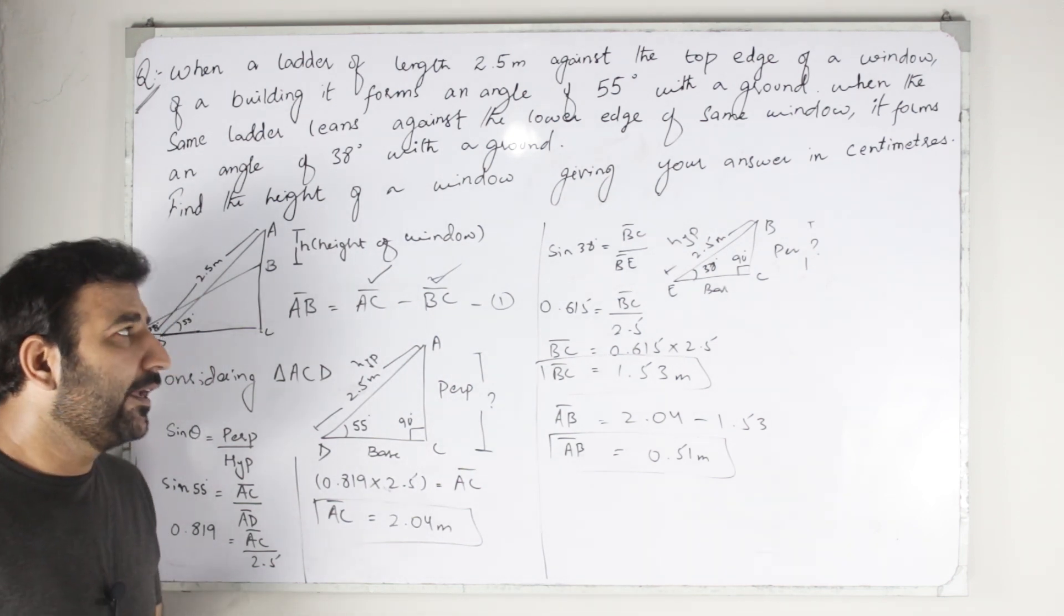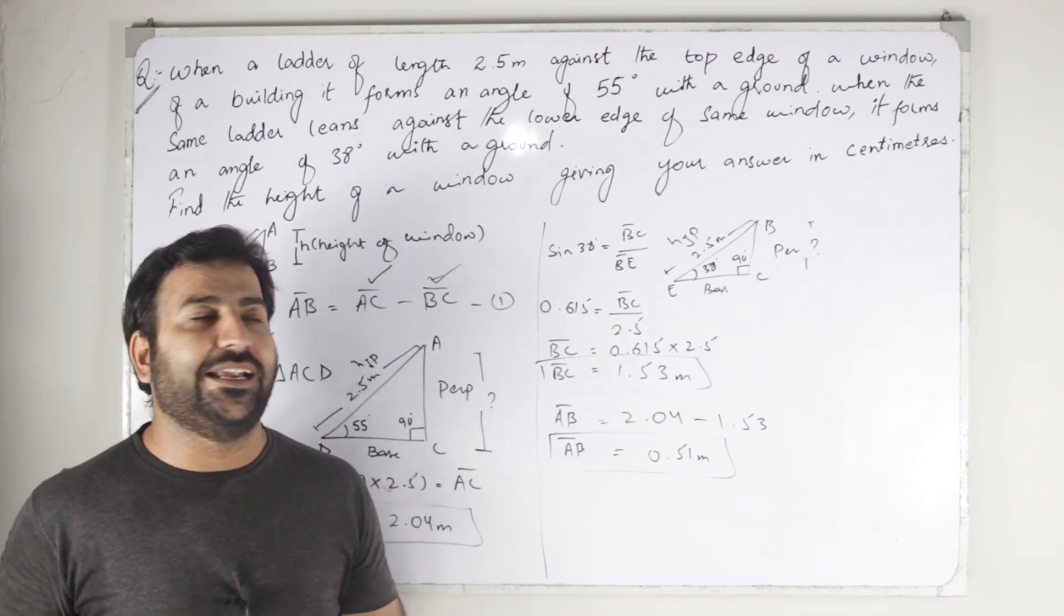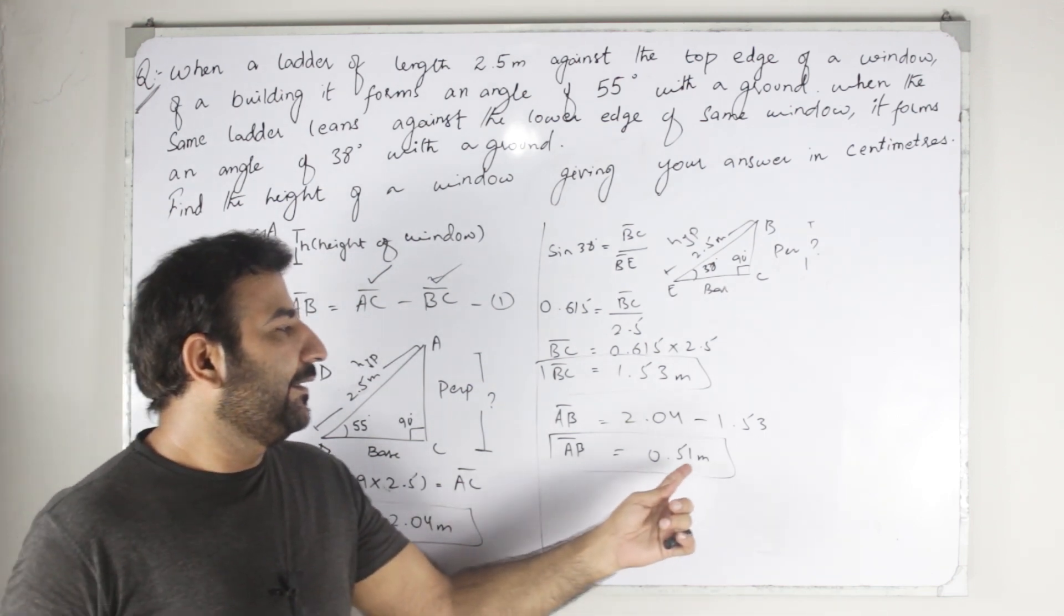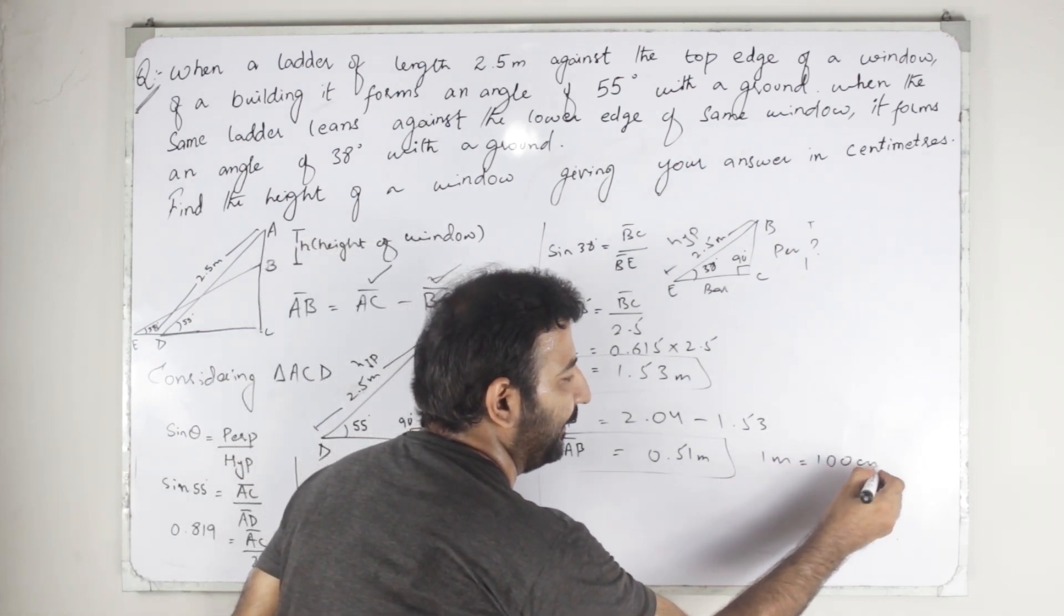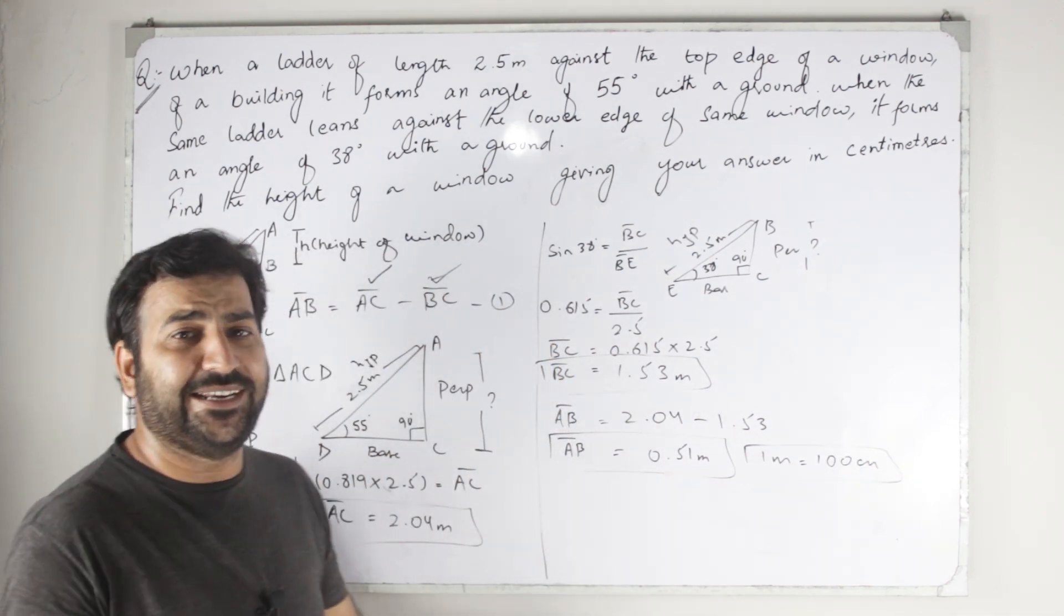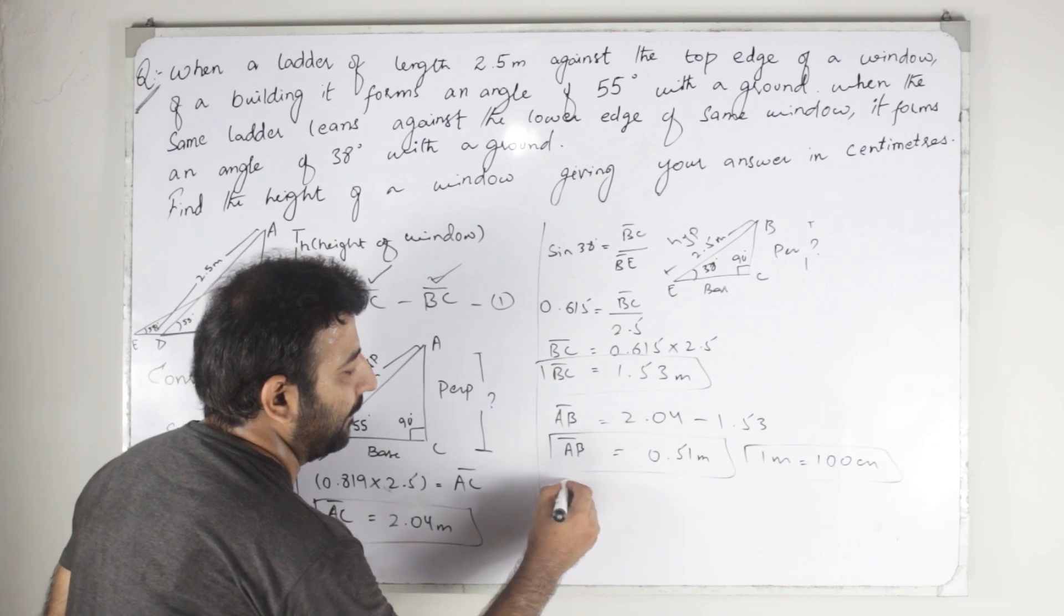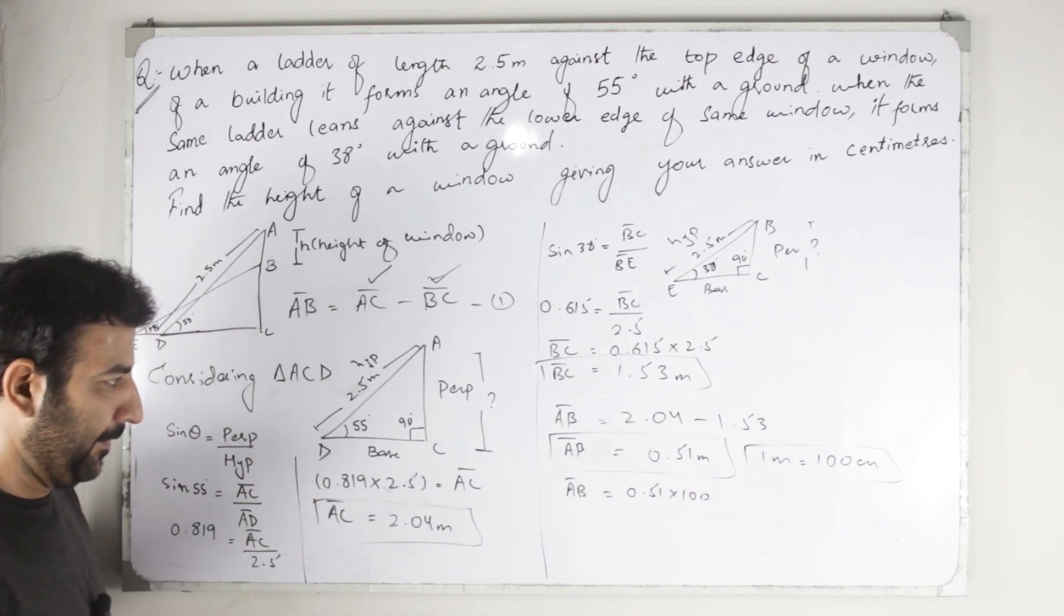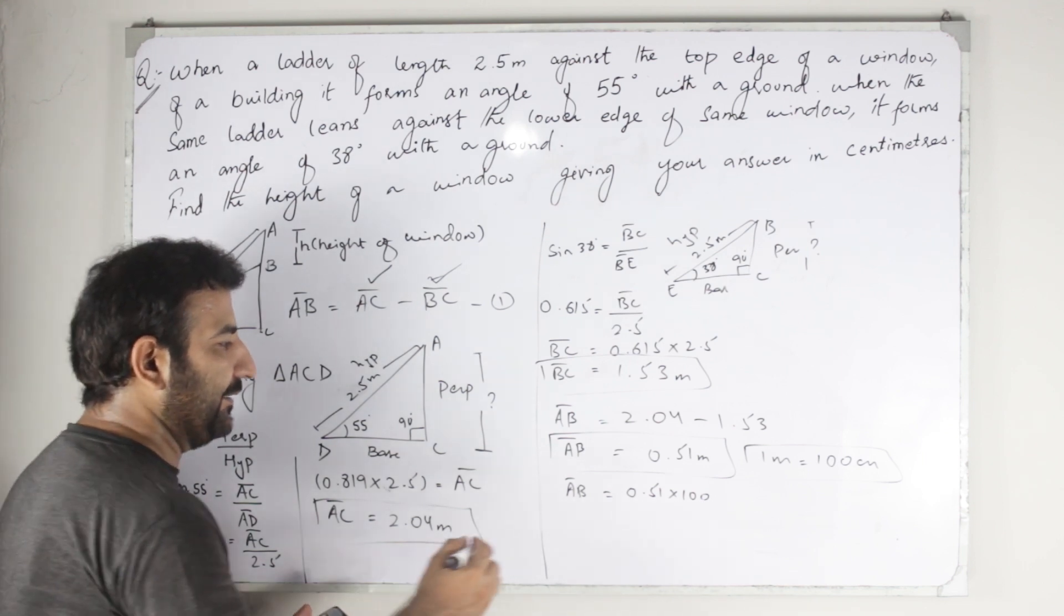Everything is done. The only one thing remaining is they want the answer in centimeters. We have the conversion: 1 meter equals 100 centimeters. In order to find the value in centimeters, we will just multiply by 100.